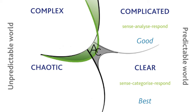In the chaotic domain, there is no pattern between cause and effect. There are no constraints — things are all over the place. Humans don't like such situations, and invariably their first action is to create a constraint, to act to try and stabilize the situation. The decision model in a truly chaotic system is to act first. There's no time to analyze or to probe. I act, then sense what's going on, and then I can respond.